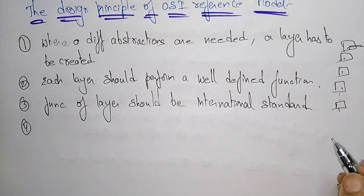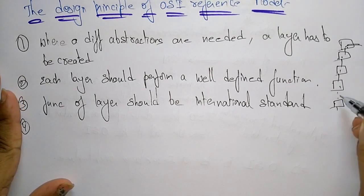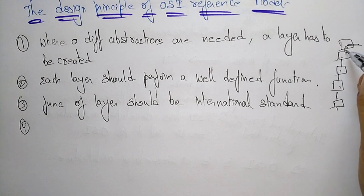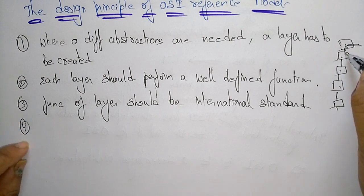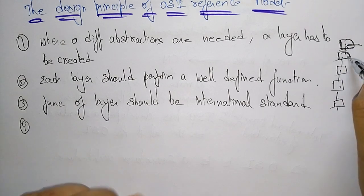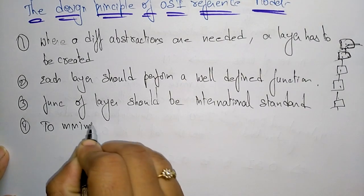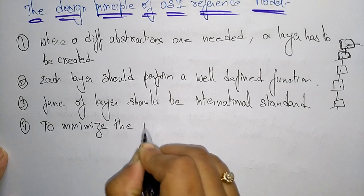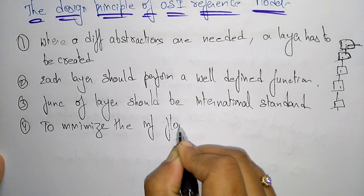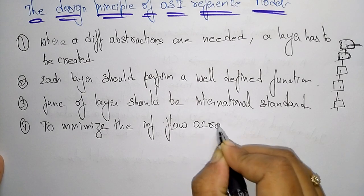Next, the layer boundary should be chosen to minimize the information flow across the interface. The interface is the connection between two layers. So whatever boundaries each layer has, they should be chosen to minimize the information flow across that interface.